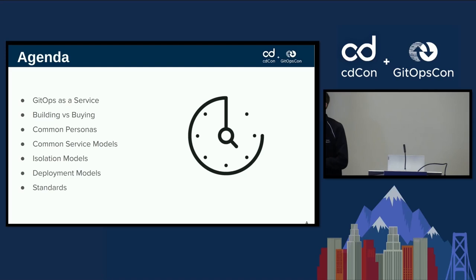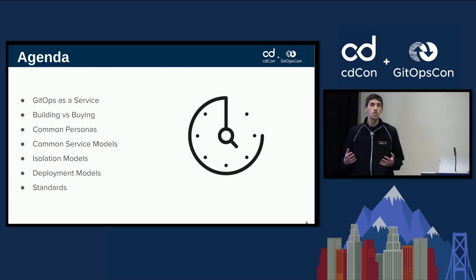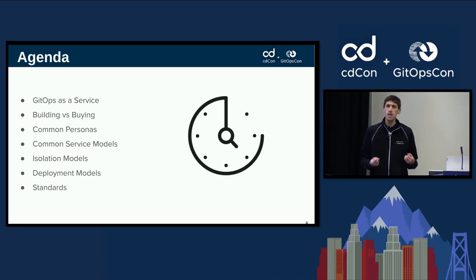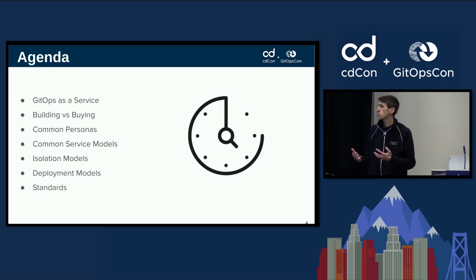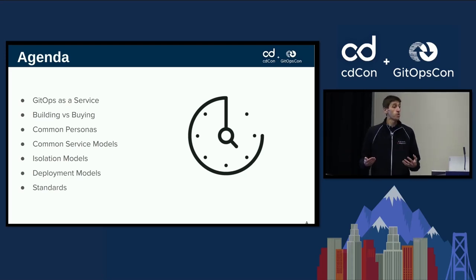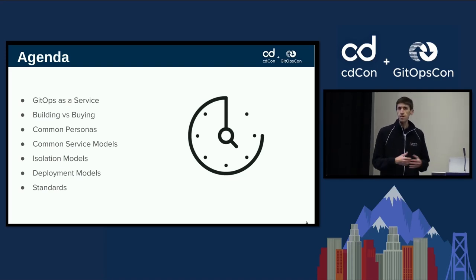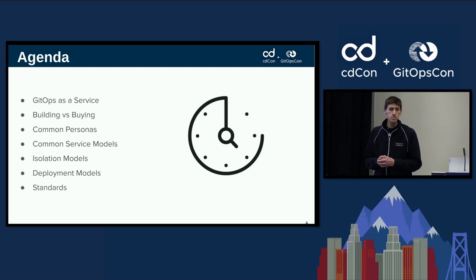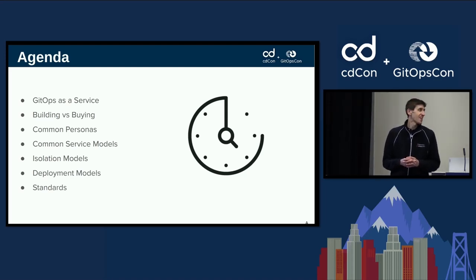Today we're going to talk about a number of different areas. First of all, what is this concept of GitOps as a Service? Then all the considerations you need to think about when deciding whether to build or buy. Some common principles and personas that come with GitOps as a Service, some common service models, considerations for isolating workloads, deployment methods, and of course everyone's favorite: standards.